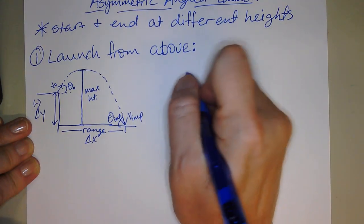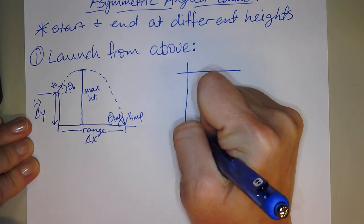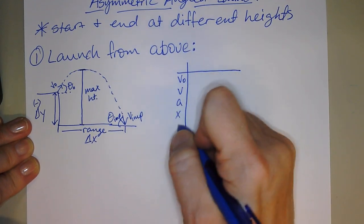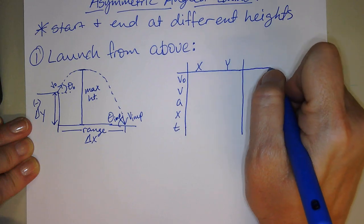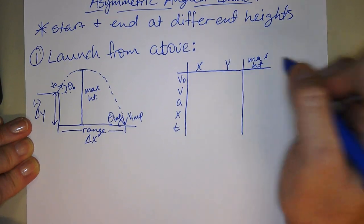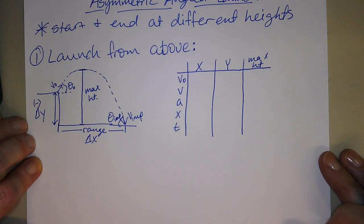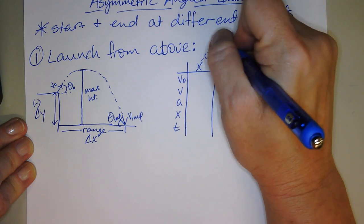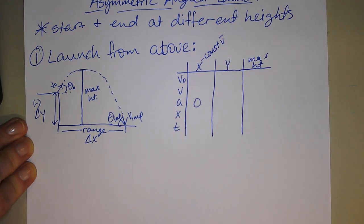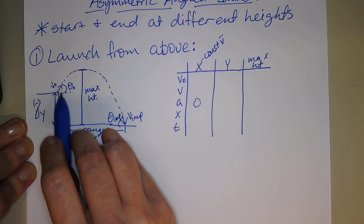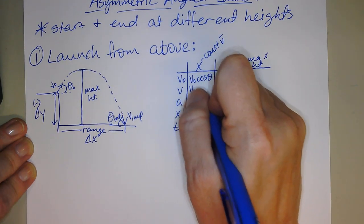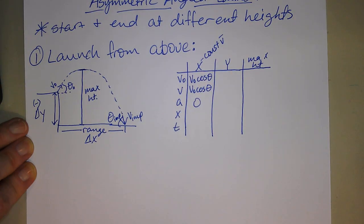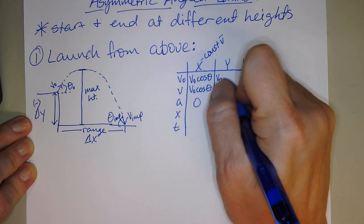We make a chart for these. So V0, V, A, X, T — with an X portion, a Y portion, and a max height portion. In the X direction, it moves at constant velocity, so acceleration is zero, meaning initial and final velocity are exactly the same. Since it's launched at angle theta, your V0 in X is V0 cosine theta, and your V final in X is also V0 cosine theta. In the Y, since it's launched at an angle, V0 in Y is V0 sine theta.